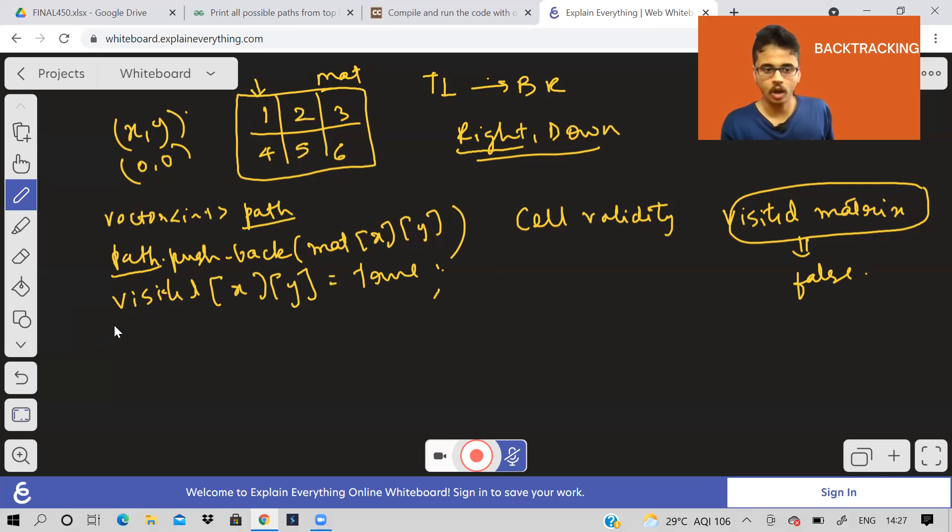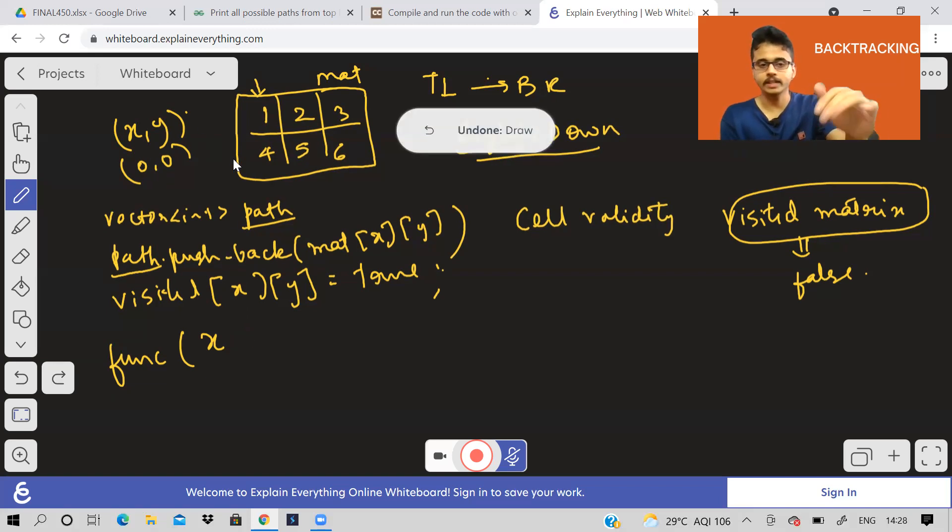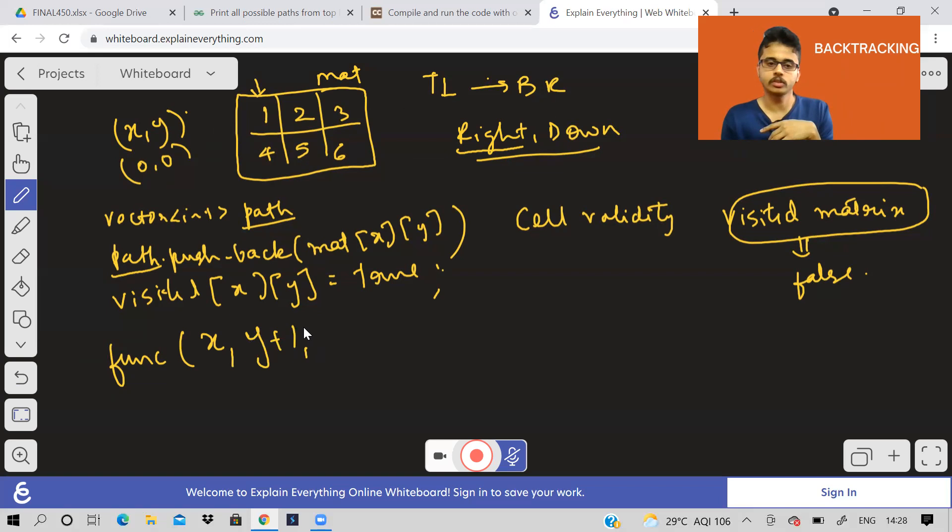So what we'll do after pushing the cell value into the vector path, we'll also say that in the visited matrix, we have visited this cell. So we will check this. Initially, all the values will be false, but we'll say visited is true. Then what we'll do? We will go right. So we'll call the function again. This time we are going right. So when we are going right, our X coordinate remains the same. Our X is rows, Y is columns. So if I do X plus one, it means down, but I want to go right. So I'll do Y plus one.